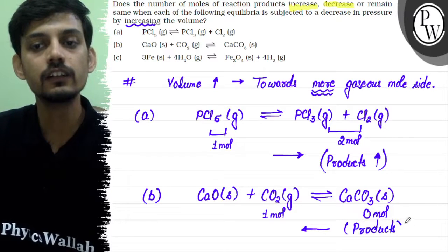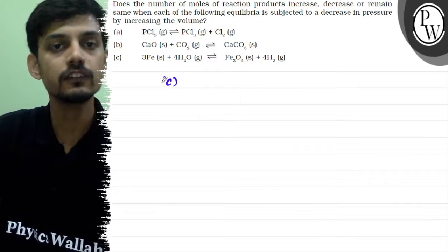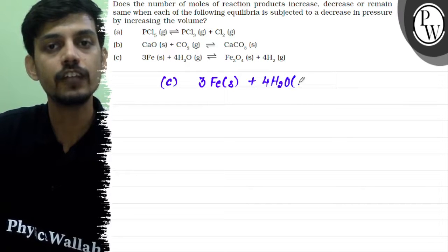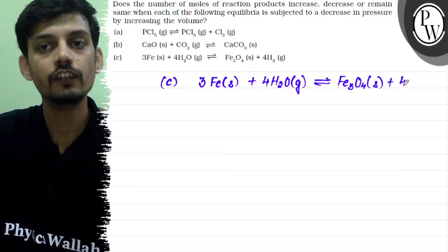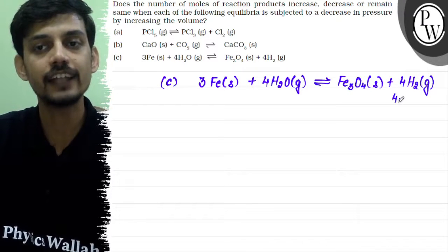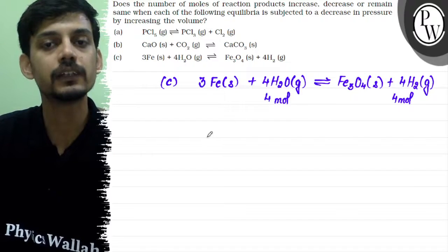If the equilibrium shifts in the backward direction, the moles of product will decrease for this particular equilibrium. Now for part C: 3Fe(s) + 4H2O(g) is in equilibrium with Fe3O4(s) + 4H2(g). Iron is solid, and there are 4 moles of H2O vapor on the reactant side, and 4 moles of H2 gas on the product side — equal gaseous moles on both sides.